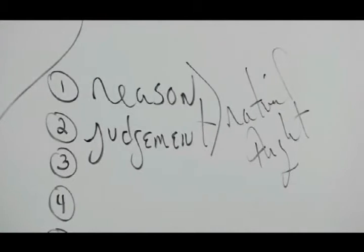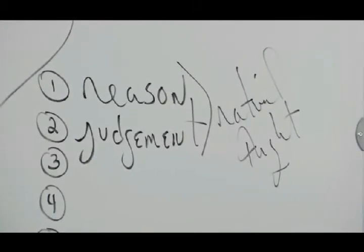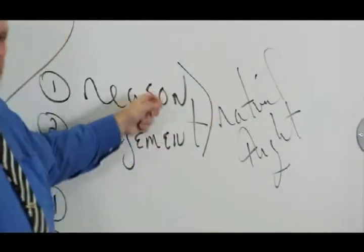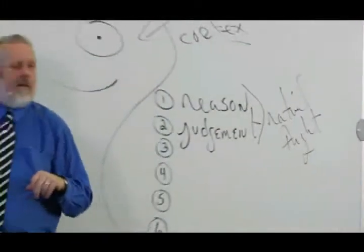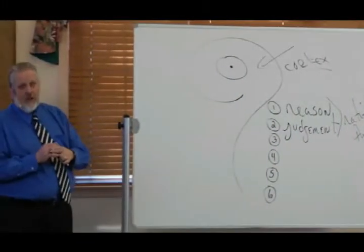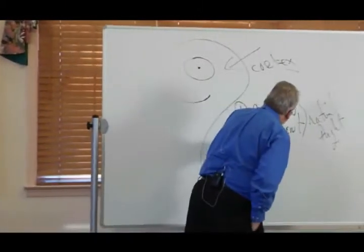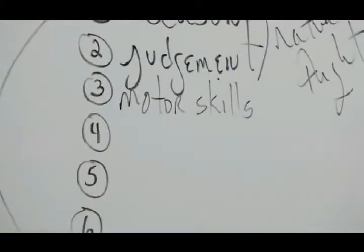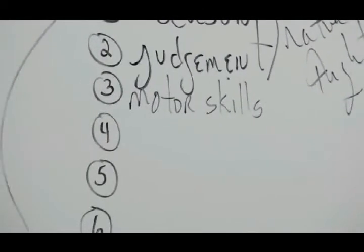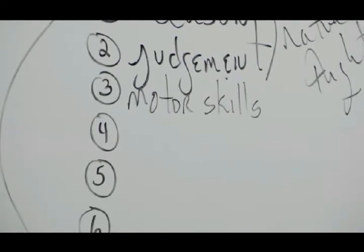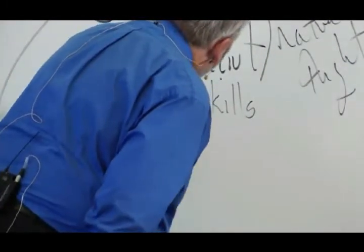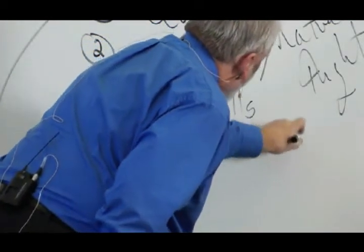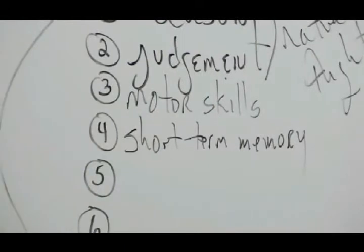So when somebody asks you to make a rational decision about something in your life — at work, at home, at school — you're using reason and judgment; you're using the cortex. Another thing housed in the cortex is some control over motor skills. The parts of the brain involved in coordination, reaction time, that type of thing — those are all housed in the cortex as well.